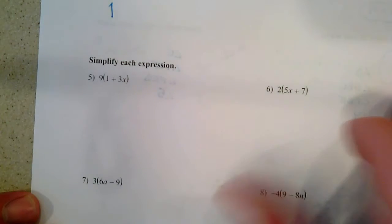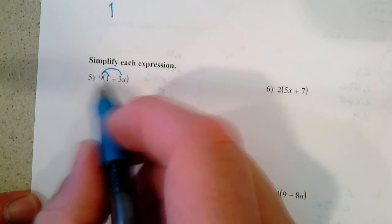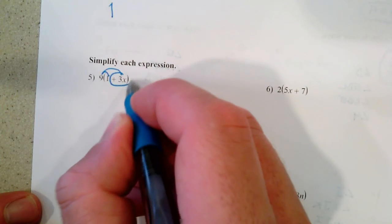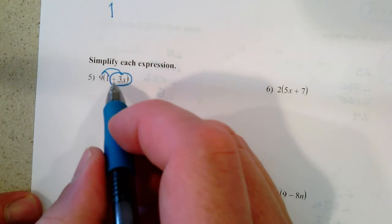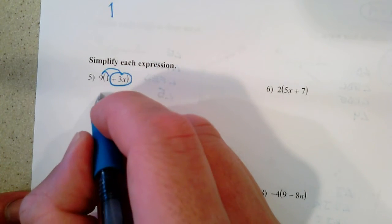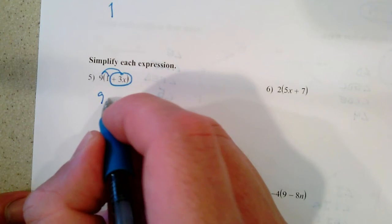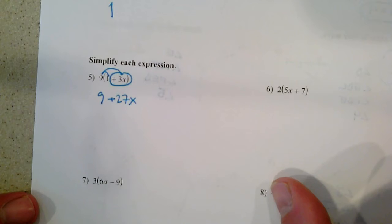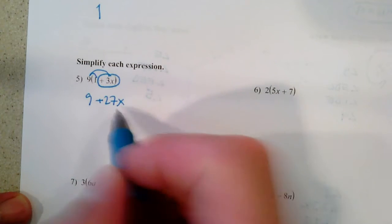9 times 1, 9 times 3x. That's a positive 3x. It's more important when it's a negative in there. But do remember this means positive 3x. So 9 times 1 is 9. 9 times positive 3 is 27. Of course, our x is still there. This means 27 times x.